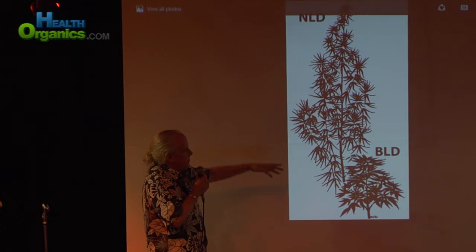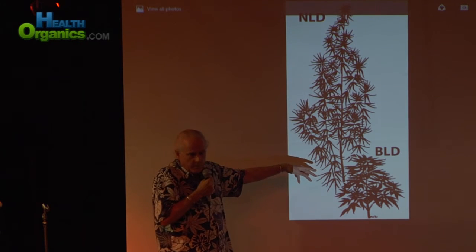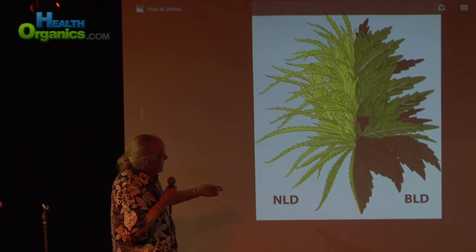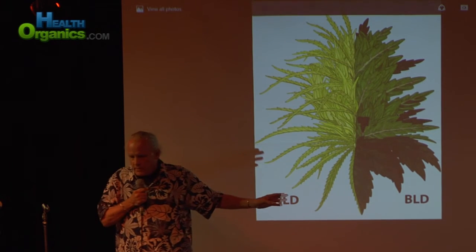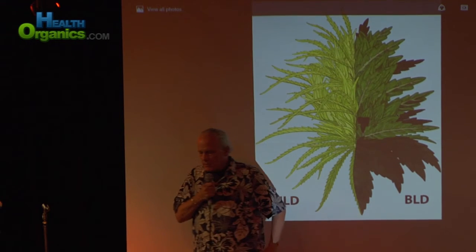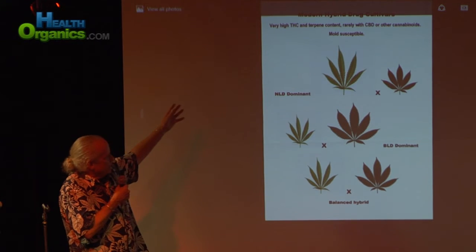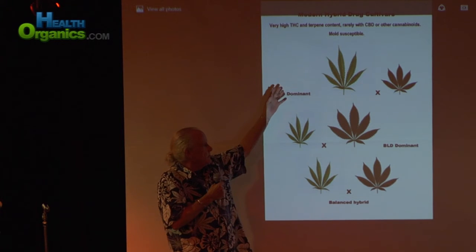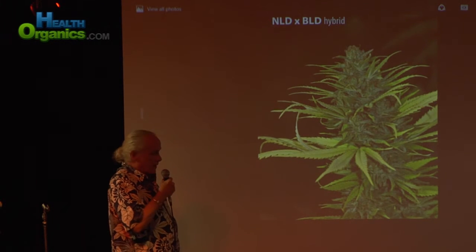Another quick comparison: tall, narrow-leafed versus shorter, broader-leafed. The two varieties, and we have breeding between the two. These narrow, lighter-green ones and these broader-leaflet, darker-green varieties — today we have varying levels of the two. We have balanced hybrids and unbalanced hybrids with narrow-leaflet or broad-leaflet dominance.